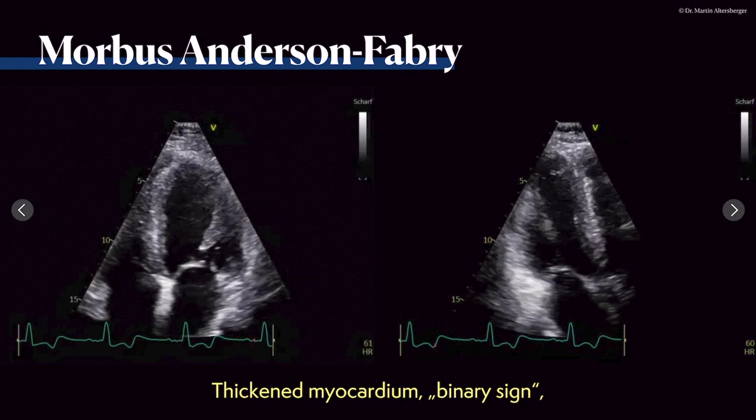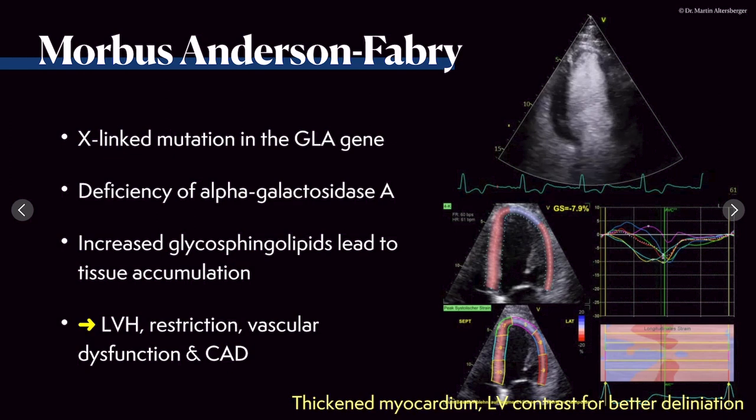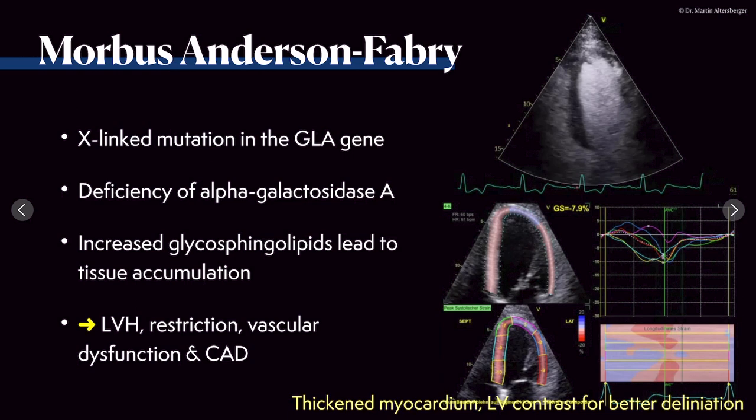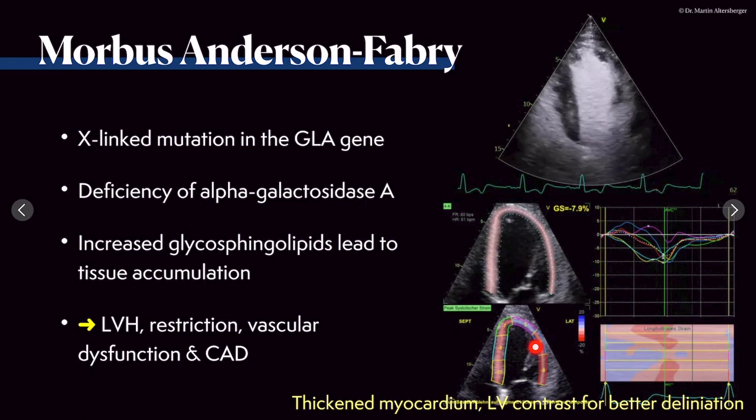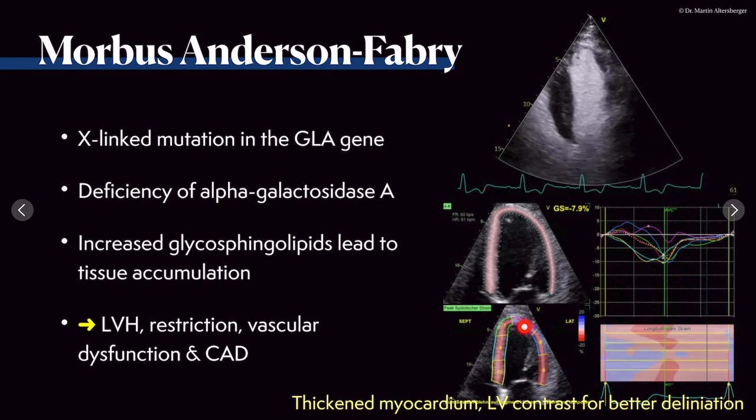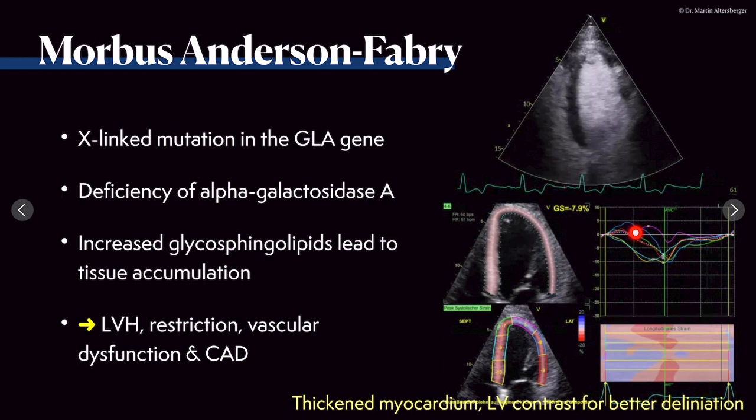The ejection fraction we graded in the range of 25 to 30%. We also included strain imaging, and in strain imaging the global strain in this four-chamber view is definitely reduced — all individual segments show reduced strain as well. Especially the lateral segment shows even some parts of dyskinesia, as we can see in this curve. We would also note some degree of post-systolic shortening.